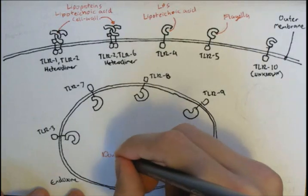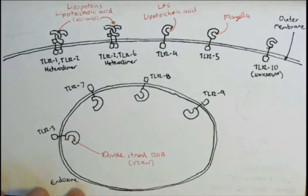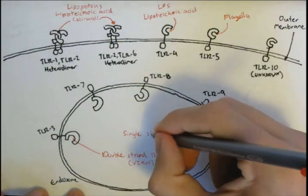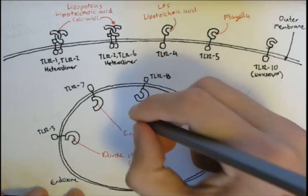Looking at the endosomal Toll-like receptors, viruses bind to these receptors. Double-stranded virus RNA binds to TLR3. Single-stranded RNA of a virus binds to TLR7 and 9, and the virus DNA can bind to TLR8.